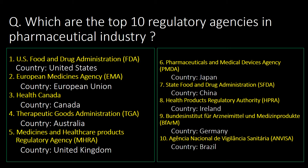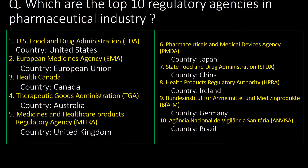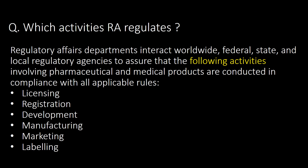Which activities does a regulatory affairs department regulate? Regulatory affairs departments interact with worldwide federal, state, and local regulatory agencies to ensure that the following activities involving pharmaceutical and medical products are conducted in compliance with all applicable rules. The activities include licensing, registration, development, manufacturing, marketing, and labeling.